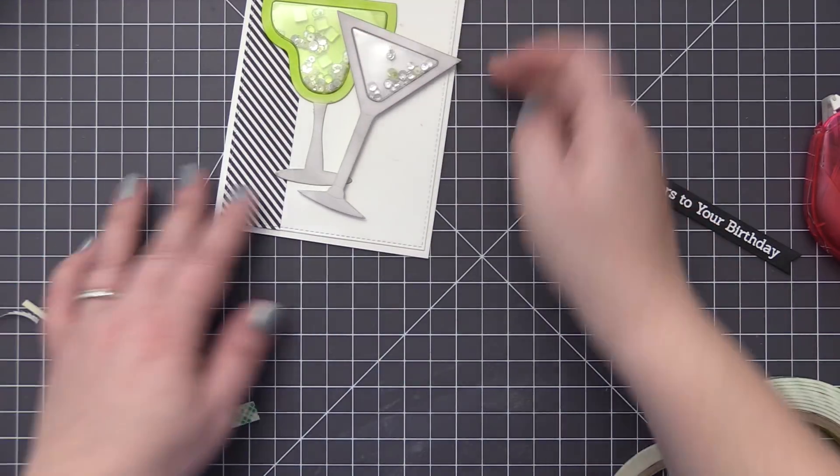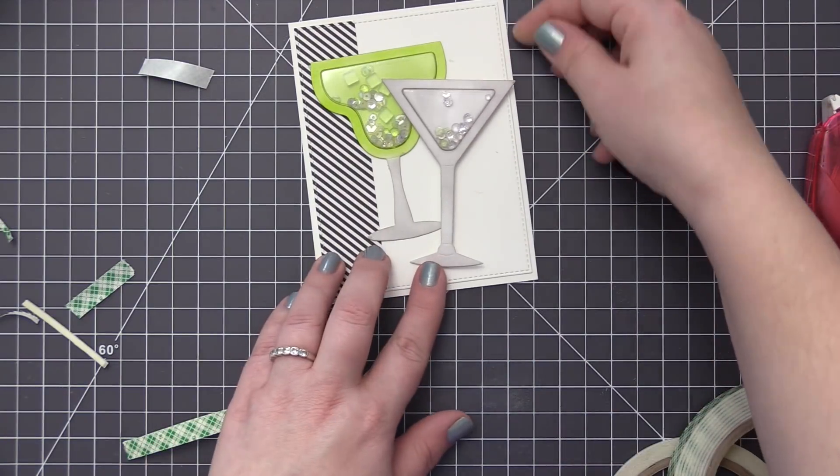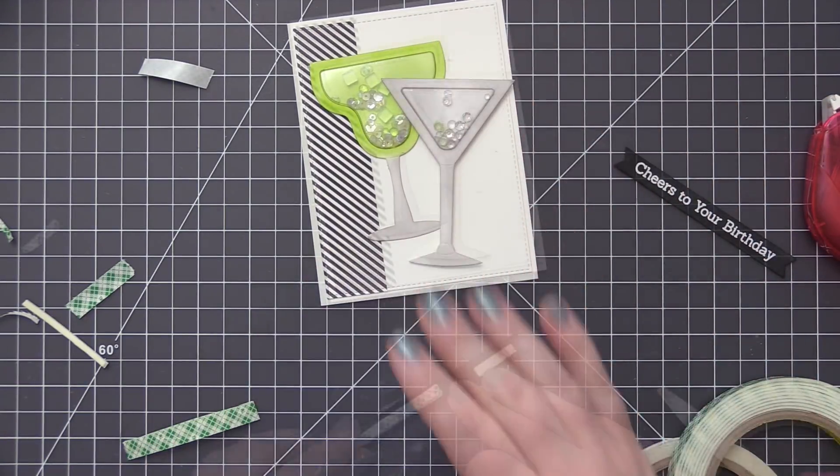And then for the martini glass this one is going to have a little bit of dimension since it's going to overlap the martini glass. So I did add some foam adhesive to both the stem as well as the right hand side and that's just going to make sure it's fully supported in the areas that are kind of raised off the card.